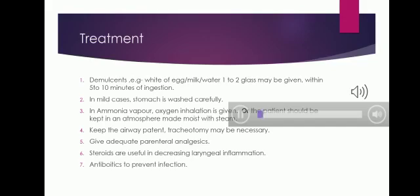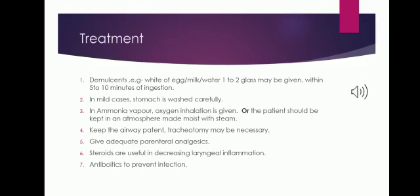Treatment of alkali poisoning: demulcents are given, which are substances that relieve irritation of the mouth by forming a protective layer. Examples include egg white, milk, and water — 1 to 2 glasses — given within 5 to 10 minutes of ingestion. In mild cases, the stomach is washed carefully. When ammonia vapors are inhaled, oxygen inhalation is given and the patient is kept in a moist steam atmosphere. The airway must always be kept patent; tracheotomy may be necessary. Adequate parenteral analgesics, steroids to decrease laryngeal inflammation, and antibiotics to prevent infection are also given.